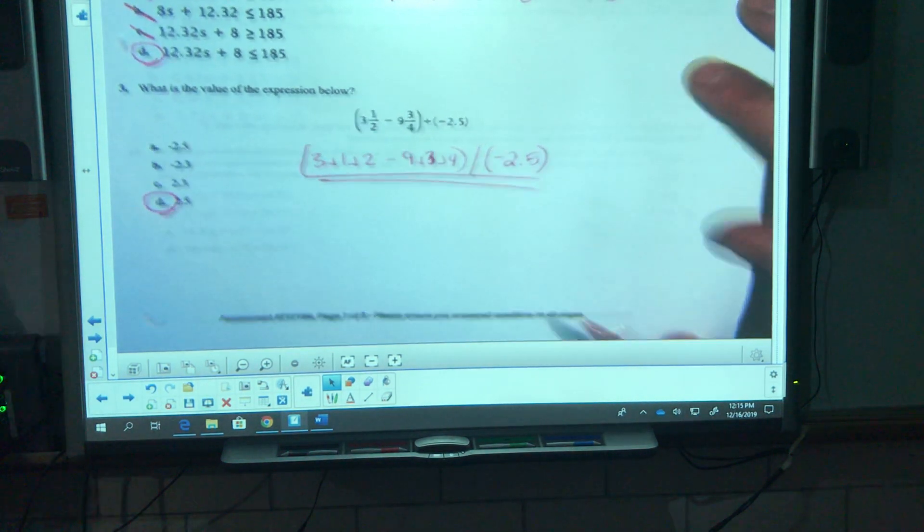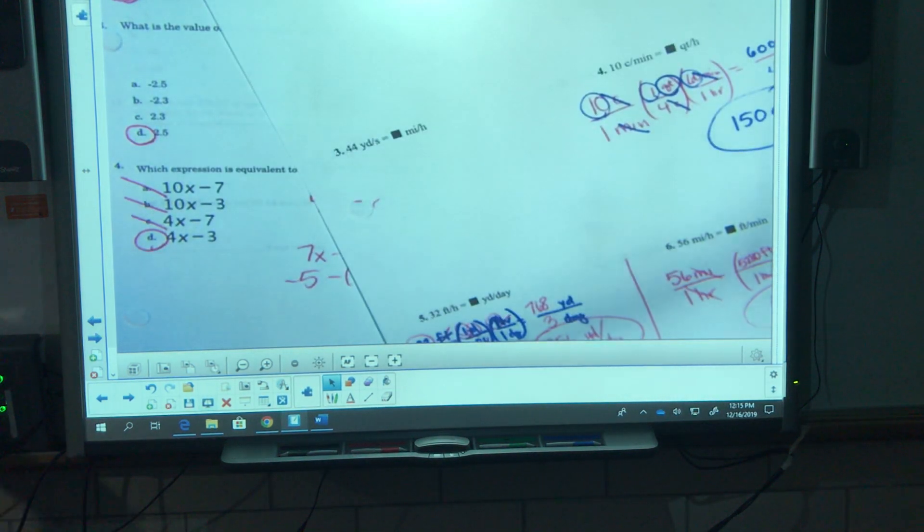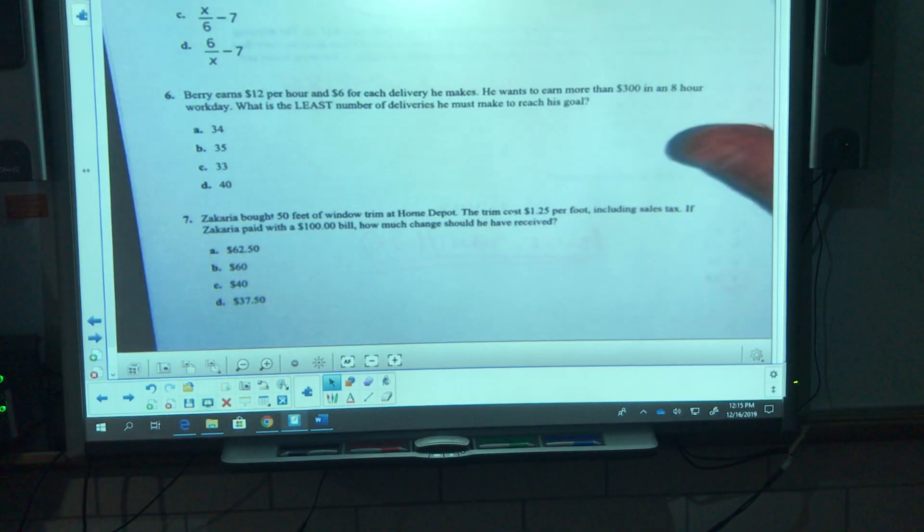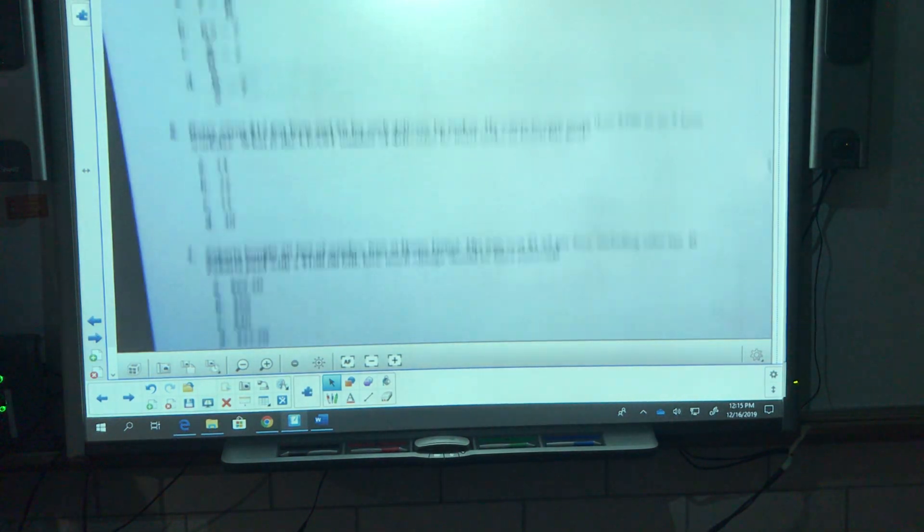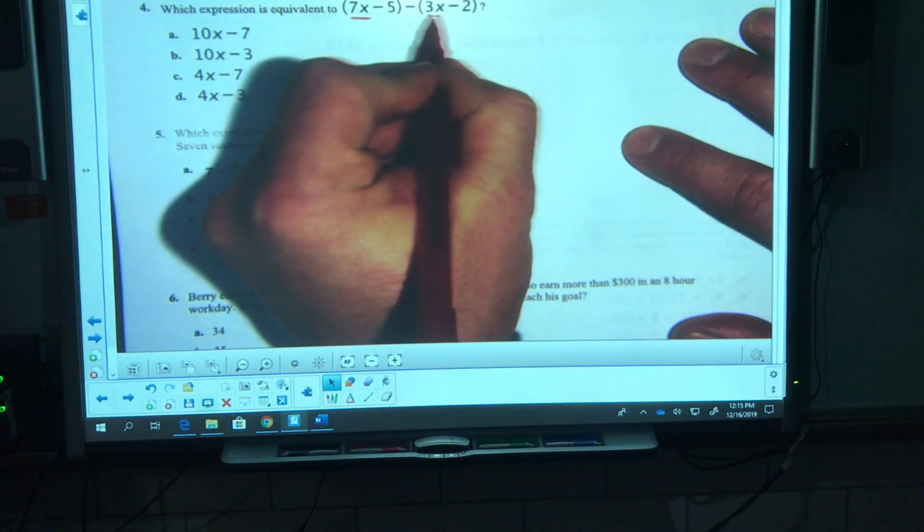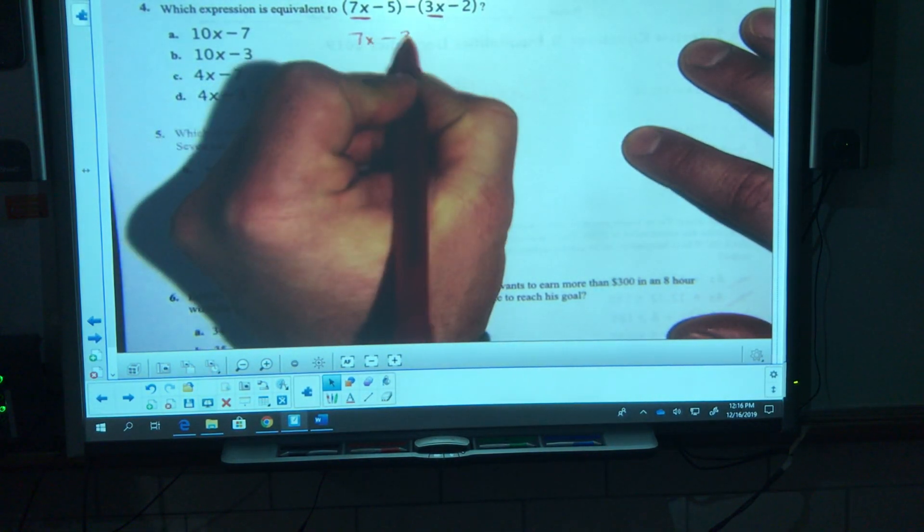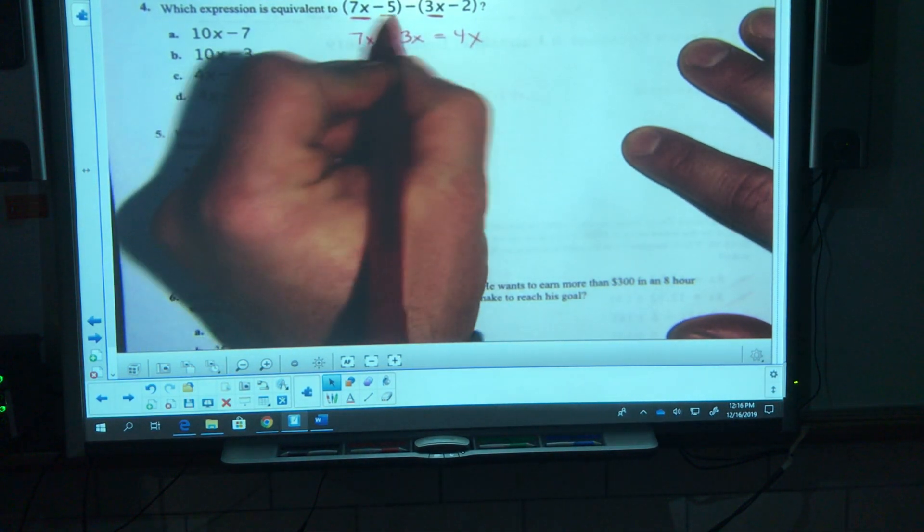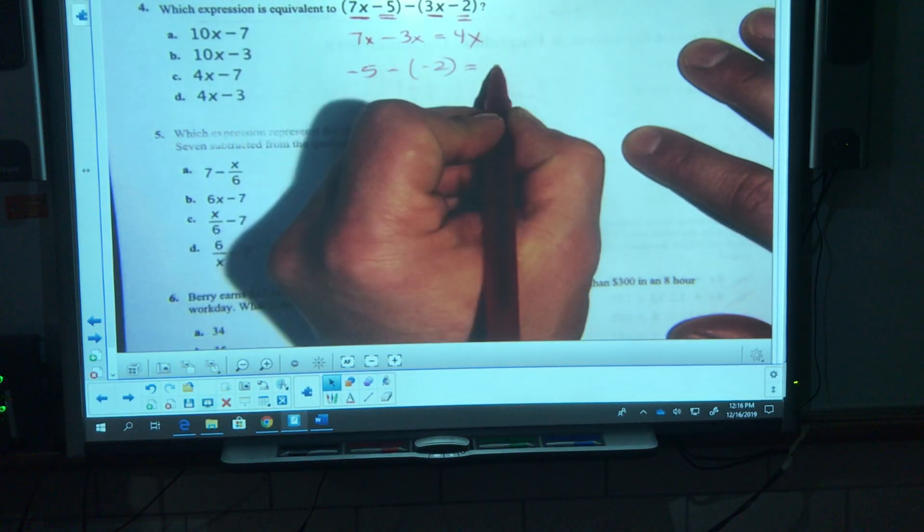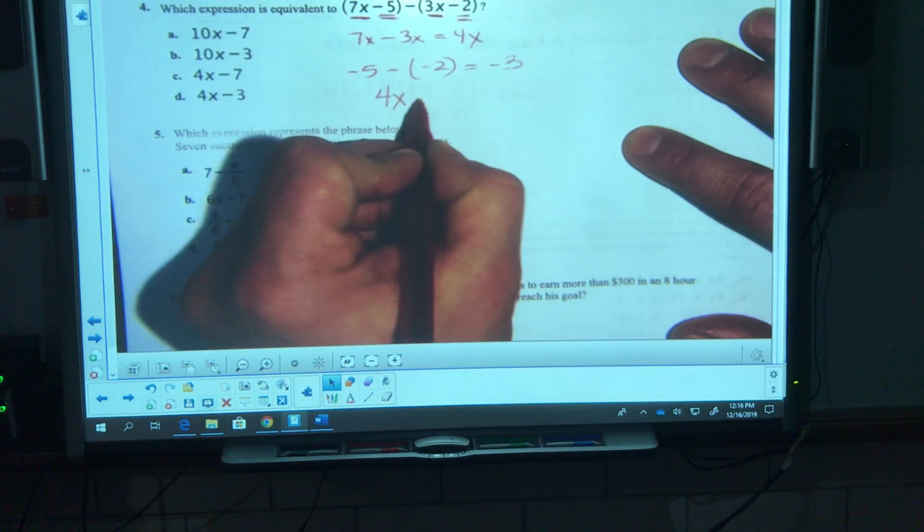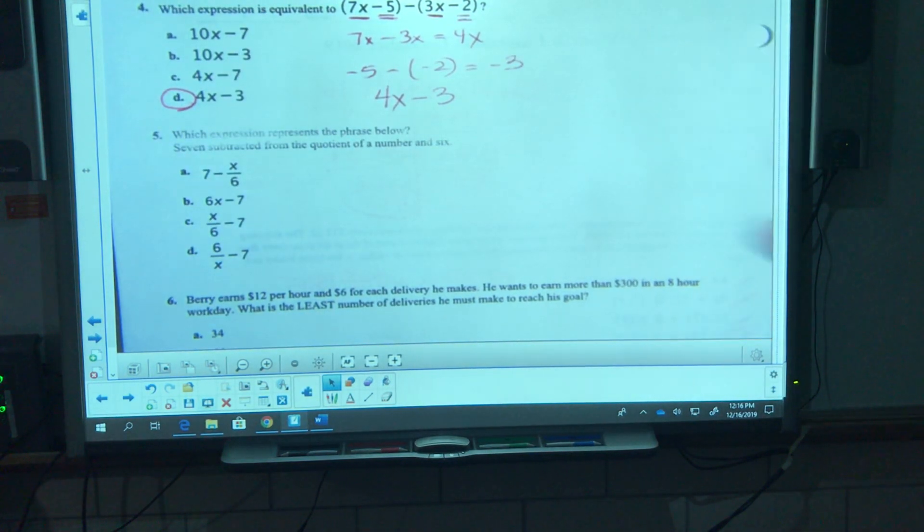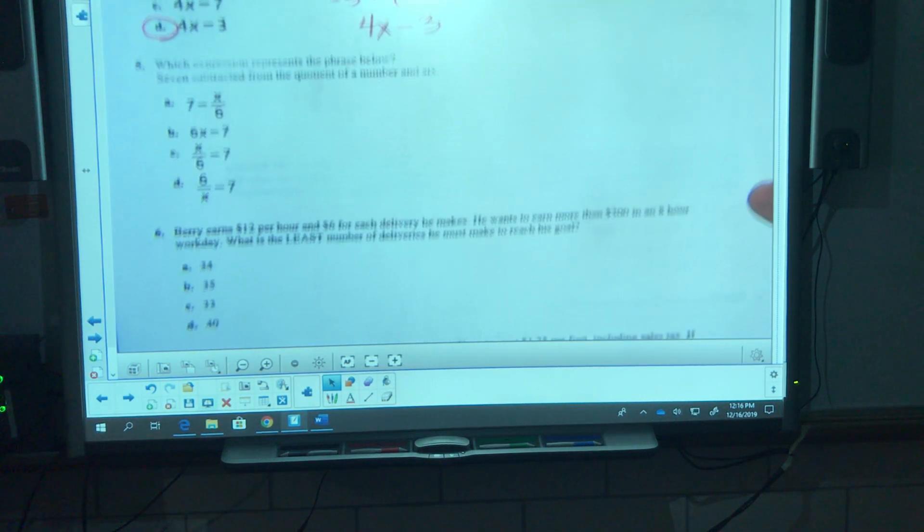Number four, for me it's at the top of the next page, for you it still might be on the first page. We're going to be subtracting. I got 7x minus 3x, that's gonna be 4x. I got negative 5 minus negative 2, type that into my calculator and I get negative 3. So putting them together, 4x minus 3, it's gotta be letter D.